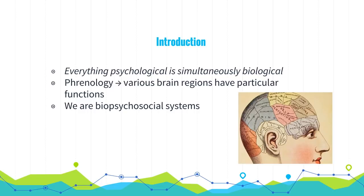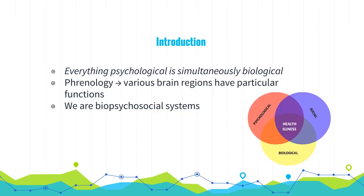So each part of your brain does something different, as shown in that picture. Another thing to remember is that we are all biopsychosocial systems. This means that we are each an individual system made up of smaller subsystems made up of even smaller subsystems — cells, organs, and subsystems.